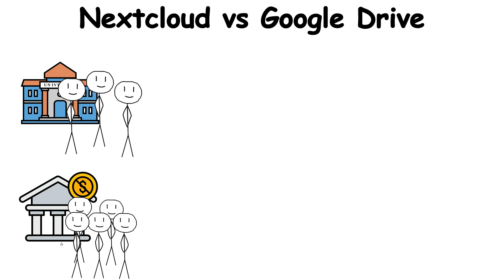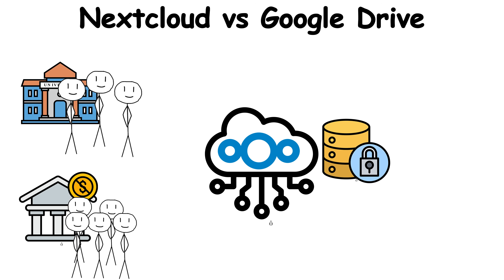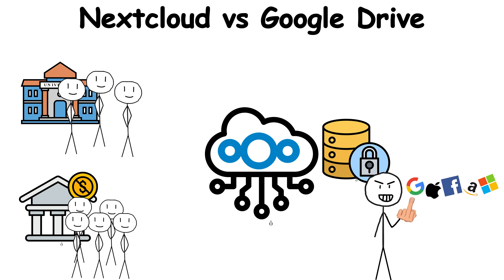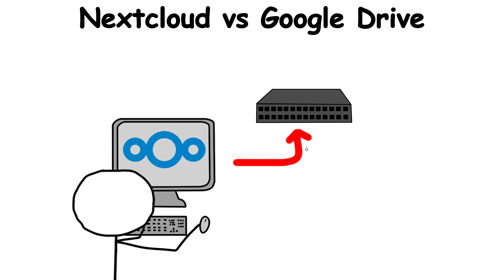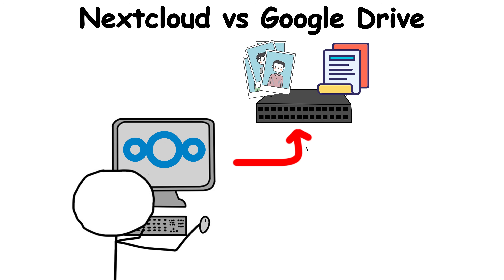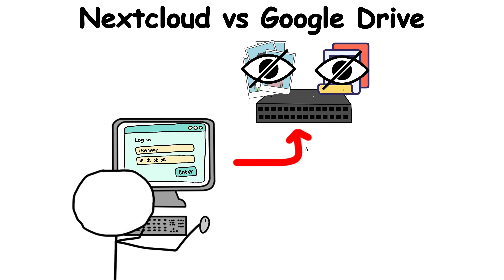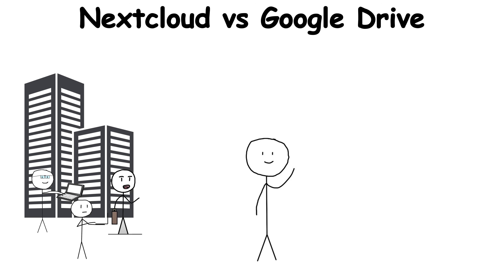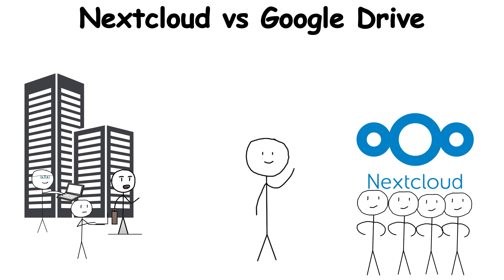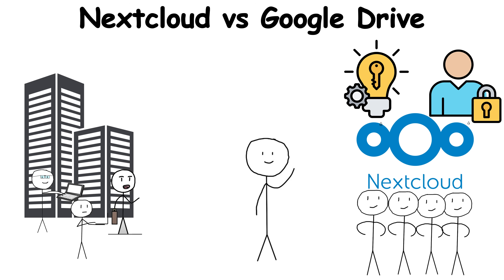Universities and non-profits deploy Nextcloud to protect sensitive records without relying on big tech. At home, some people use it as a private family hub for photos and documents, all hidden behind their own login. It's like replacing a skyscraper full of Google engineers with a community-built tool that respects control and privacy above everything else.